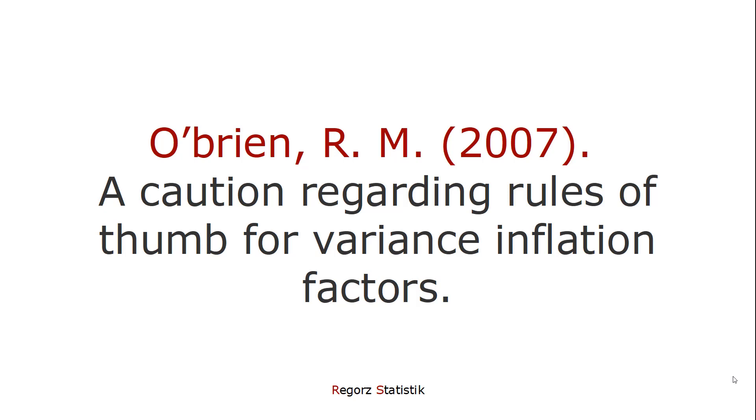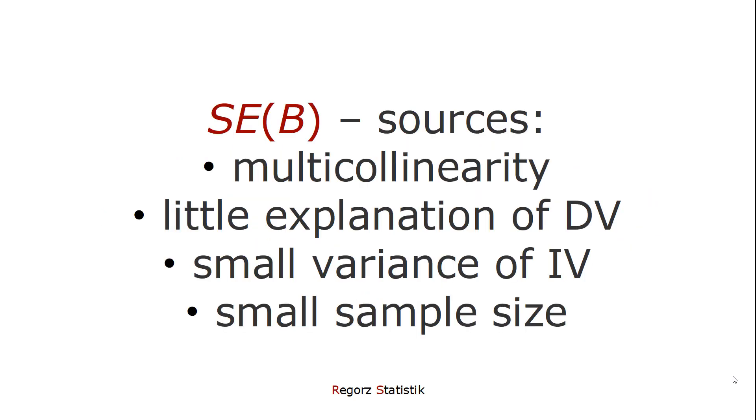And O'Brien basically pushes back against just looking at the variance inflation factor and when it's above 10, concluding that you have a big problem and that you can't use the results. The main argument is there are multiple possible sources for a high standard error for a regression weight. One of those possible sources for high standard error is multicollinearity. And that's basically what the variance inflation factor tells us, that the variance of the regression weight is inflated.